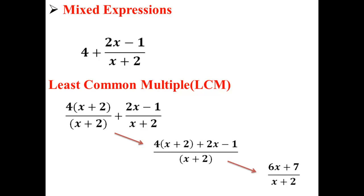After performing the distributive property and simplifying further, we find a final answer of 6x plus 7 all over x plus 2. And now we've simplified our mixed expression.